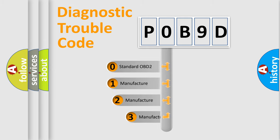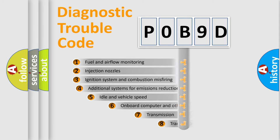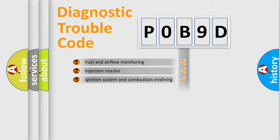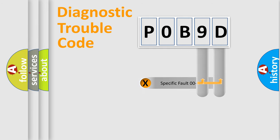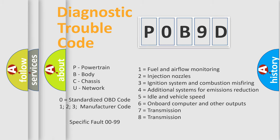If the second character is expressed as zero, it is a standardized error. In the case of numbers 1, 2, or 3, it is a more specific expression of a car-specific error. The third character specifies a subset of errors. This division is valid only for the standardized DTC code, where only the last two characters define the specific fault of the group — and only when the second character is zero.